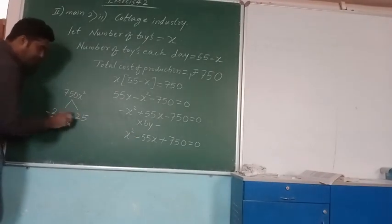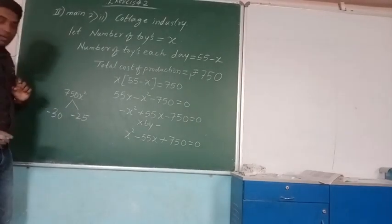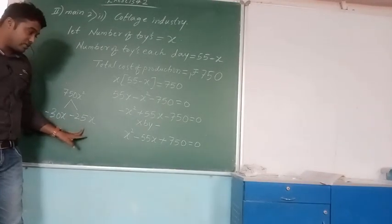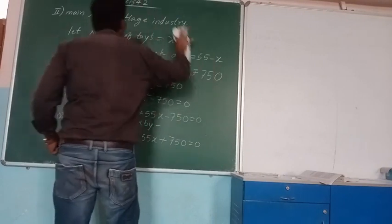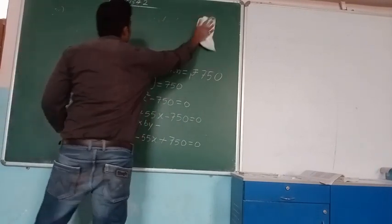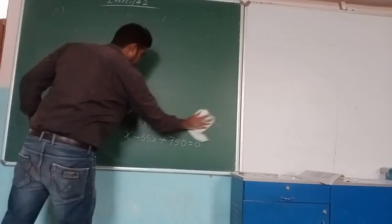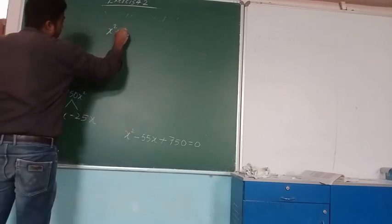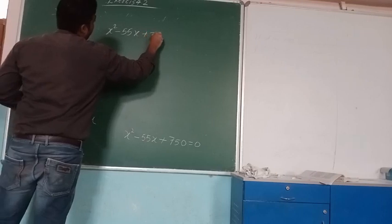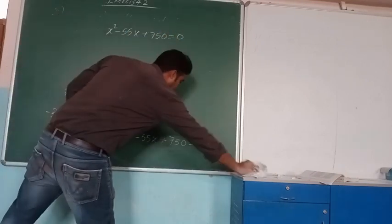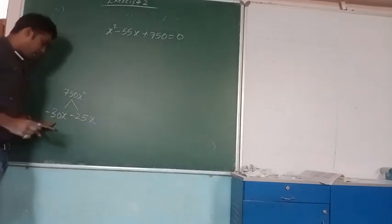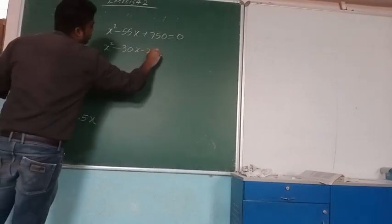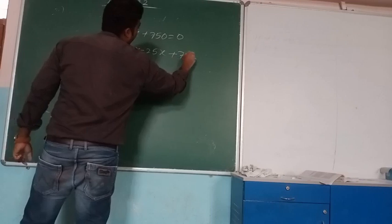The sign here is minus, so both factors should be minus. The factors are minus 30x and minus 25x. So substituting into the equation: x squared minus 30x minus 25x plus 750 equals 0.